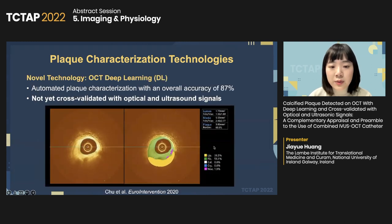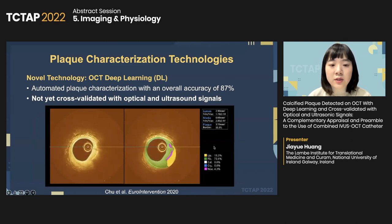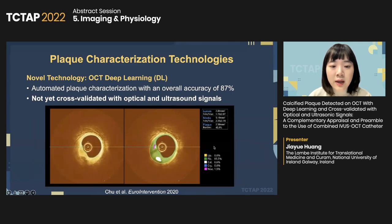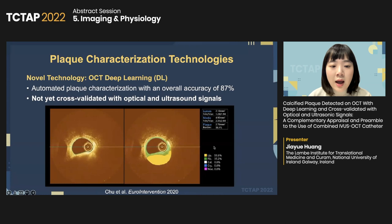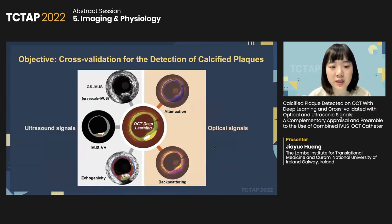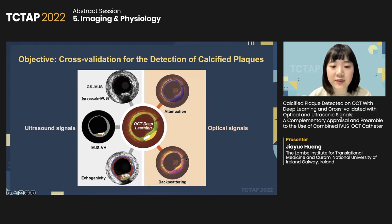For OCT images, previous studies have proven that optical properties including light attenuation and backscattering have the potential to differentiate different types of tissues, since each type has a unique distribution of optical properties. For calcified plaque, attenuation and backscattering are both very low. Recently, a novel deep learning technology was proposed for OCT. This automated method showed an accuracy of 87%, but has not been comprehensively cross-validated using previously mentioned technologies. The objective of our study is to fill this gap, focusing on coronary calcification detection and comparing calcium arc measurements across modalities.